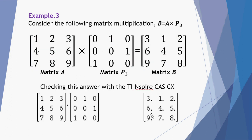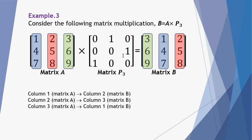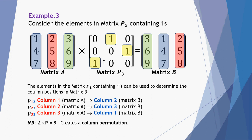Final column permutation example — a different permutation matrix again, still only one 1 in each column and one 1 in each row. Column 1 has been shifted to column 2. Column 2 of matrix A has been shifted to column 3 of matrix B. And column 3 of matrix A has been shifted to column 1 of matrix B. The element P12 means column 1 from A is relocated to column 2 in B. P23 means column 2 of A moves to column 3 of B. And P31 tells me the third column in matrix A is relocated to the first column in matrix B.